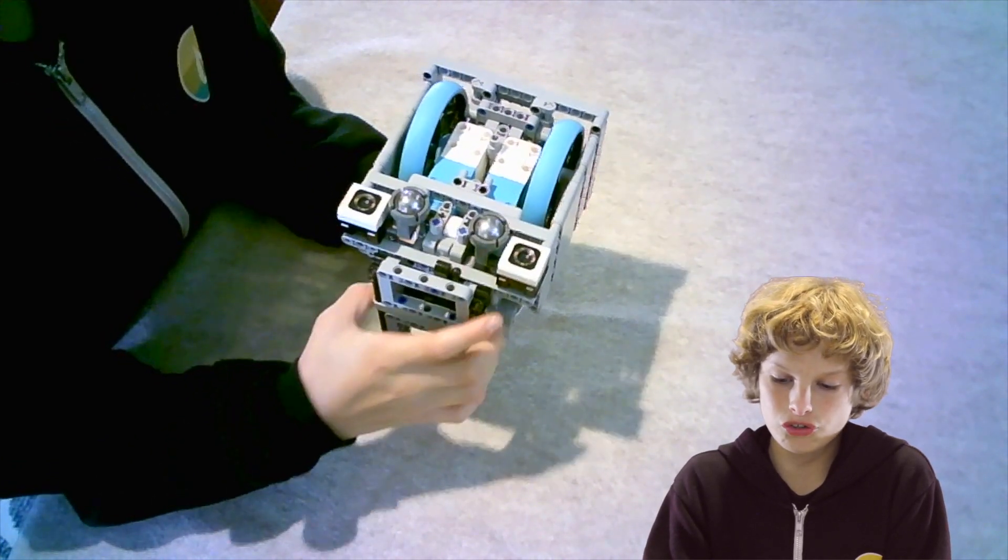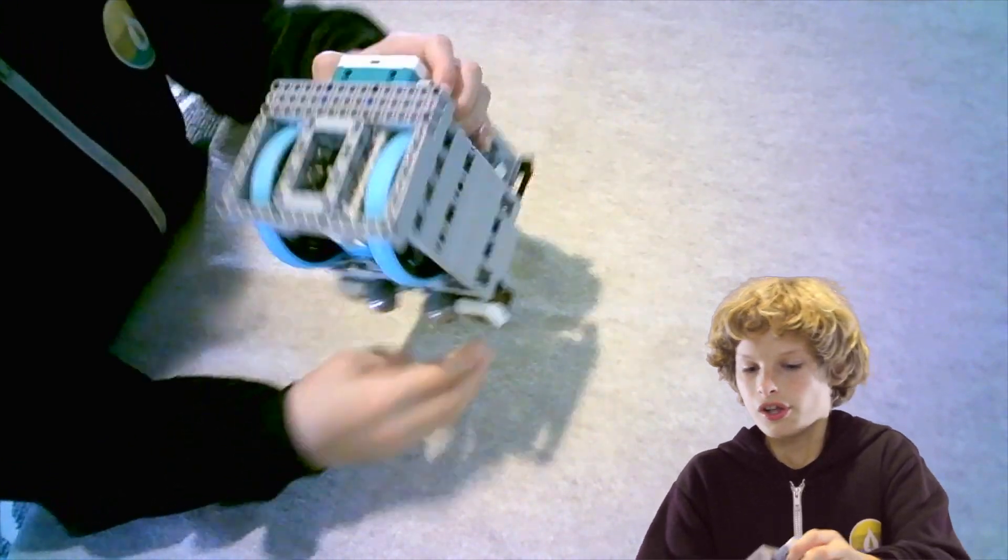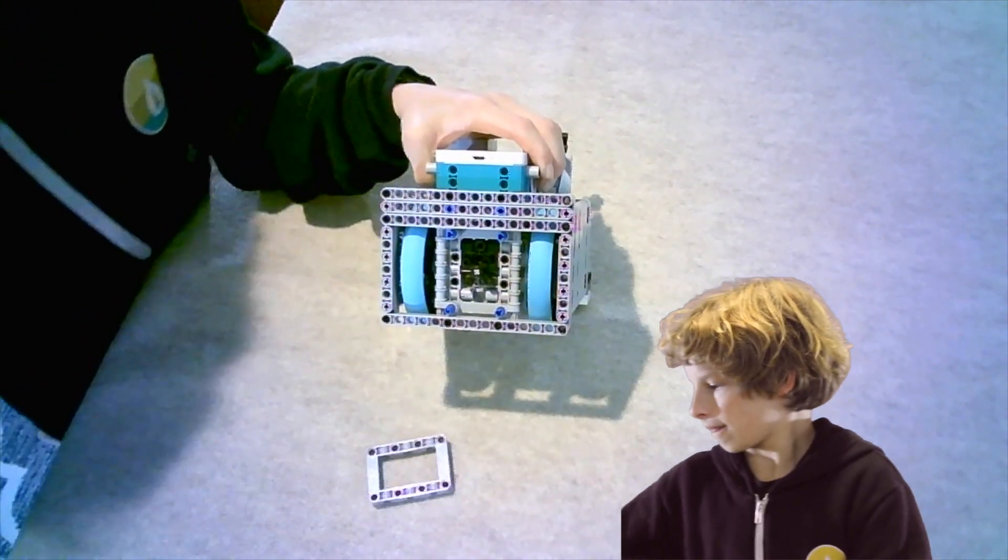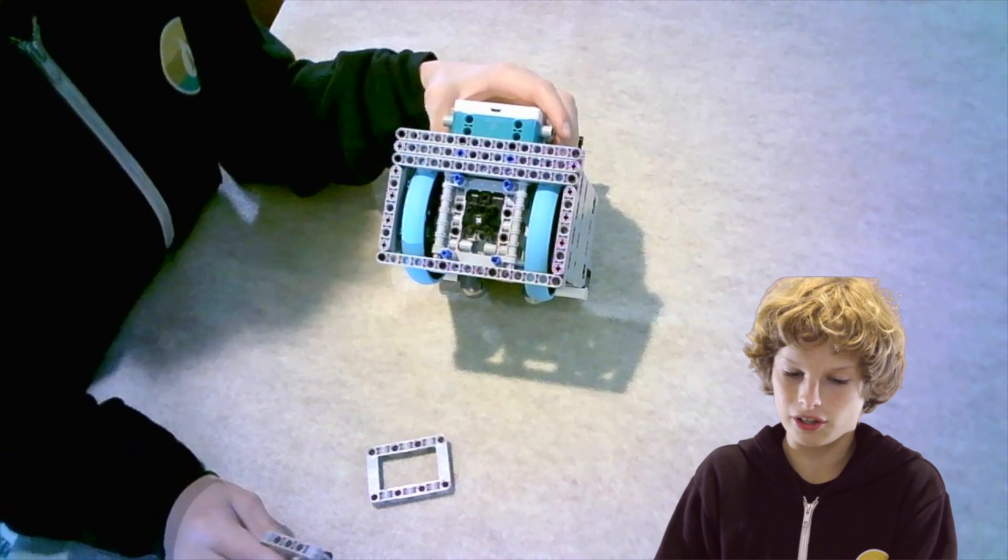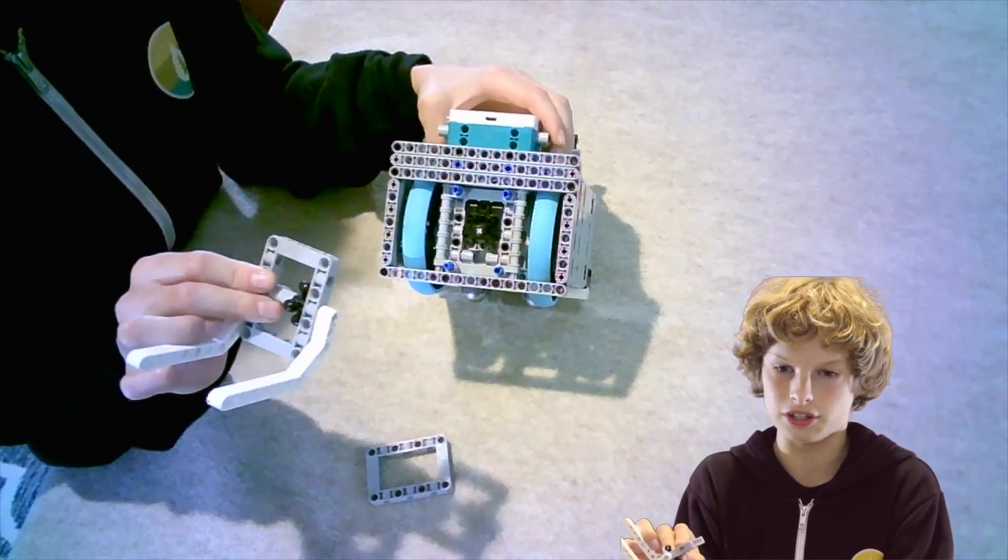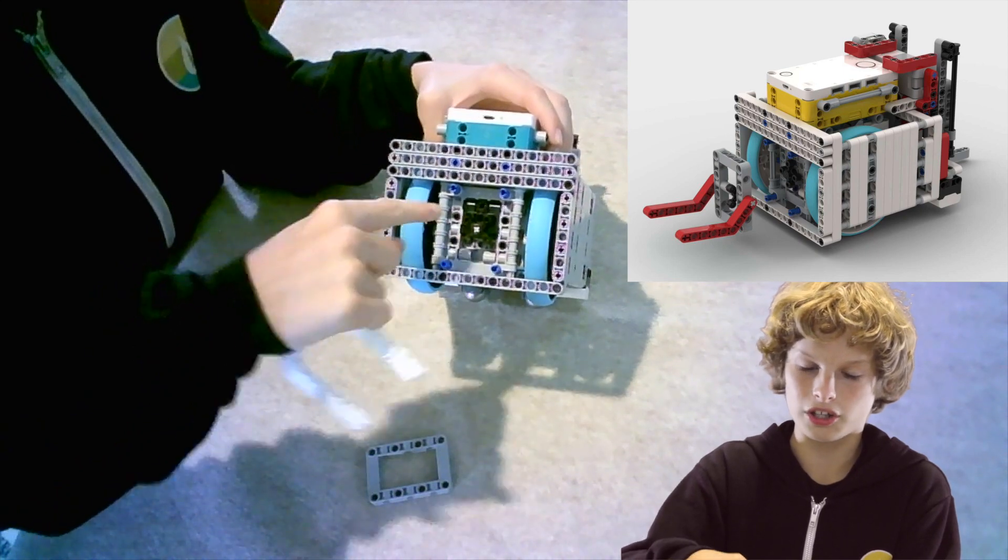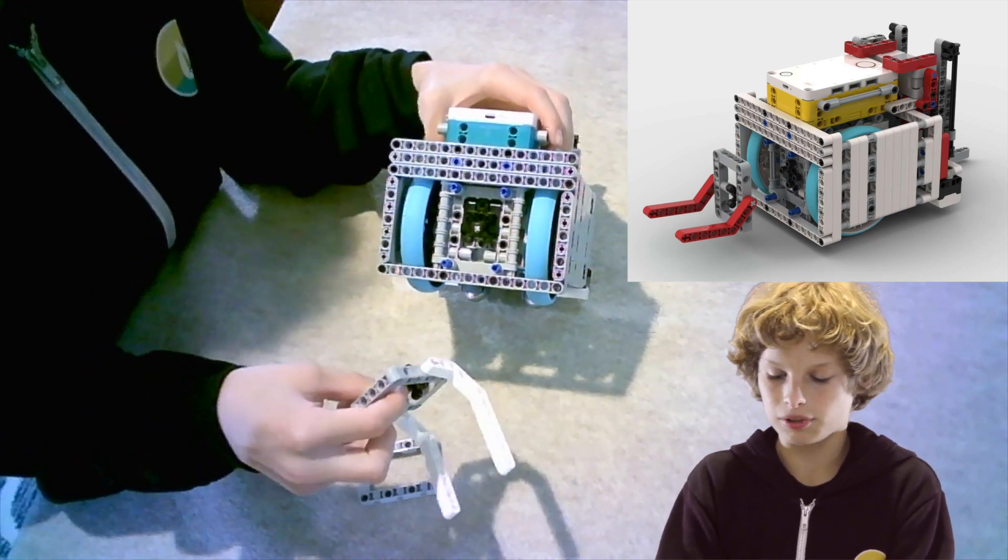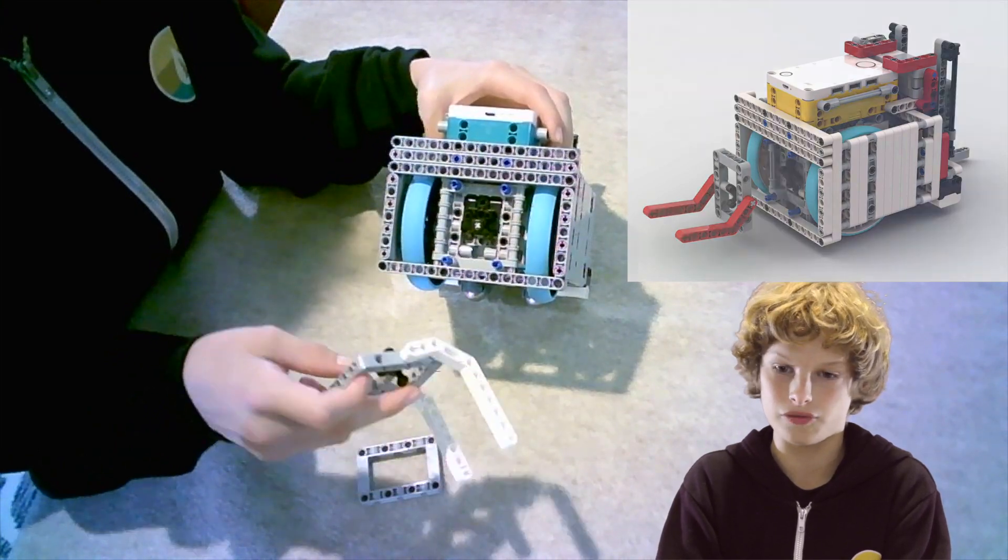So when this turntable moves this dog gear also spins. And when I take that plate off I can put on an attachment like these so that when the dog gear turns around it moves the attachments to complete missions in an easier and effective way.